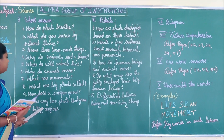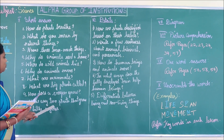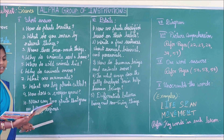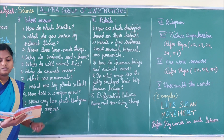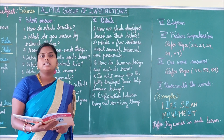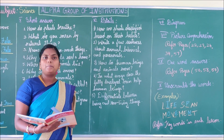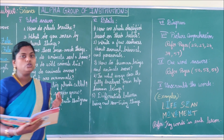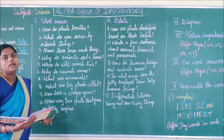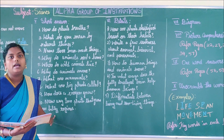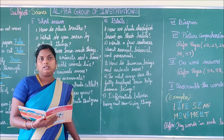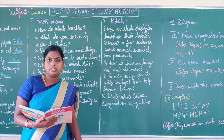Tenth question: Name any two plants that grow in hilly regions. The first one is tea and the next one is pine.